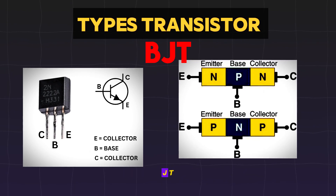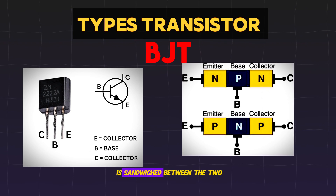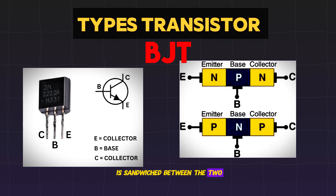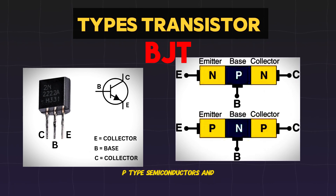In a PNP BJT, the N-type semiconductor is sandwiched between the two P-type semiconductors.